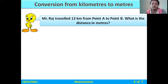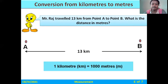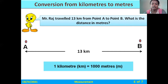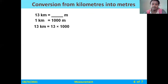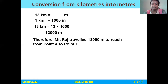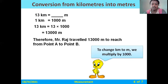Let us see kilometers to meters. Mr. Raj traveled 13 kilometers from point A to B. What would be the distance in meters? We know that 1 kilometer equals 1000 meters. So we take 13 multiplied by 1000, which results in 13,000 meters. Therefore, Mr. Raj traveled 13,000 meters from point A to point B. To change kilometers to meters, we multiply by 1000.